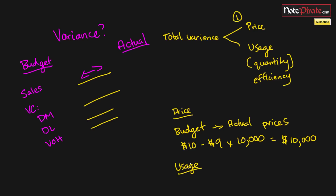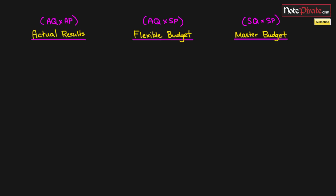The usage variance is very similar, except that instead of using prices it uses quantities. For example, did we sell a hundred thousand units instead of a hundred and ten thousand? That would also be an unfavorable variance. You'll see more of what I mean as we go through the next parts.